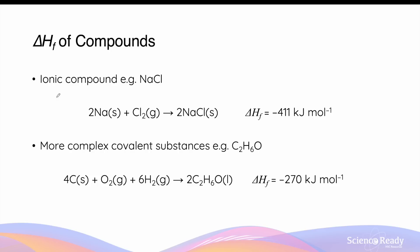For example, the formation of an ionic compound such as sodium chloride from its standard state — that is, sodium metal in solid state and chlorine gas in its gaseous state — would have an enthalpy change of formation of negative 411 kilojoules per mole. So every time we form one mole of sodium chloride from these respective reactants, we'll release 411 kilojoules of energy.